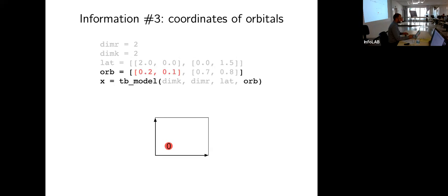The third piece of information is where your orbitals are. Our wave function will be chopped into little pieces — for example, a d_xy orbital on some atom, represented with a red blob. The location of that orbital is 20 along the first vector and 10 along the second vector, using fractional reduced crystal coordinates. In Python, the first orbital has index zero. The second orbital is located at 70 along the first vector and 80 along the second, shown in blue with index one.